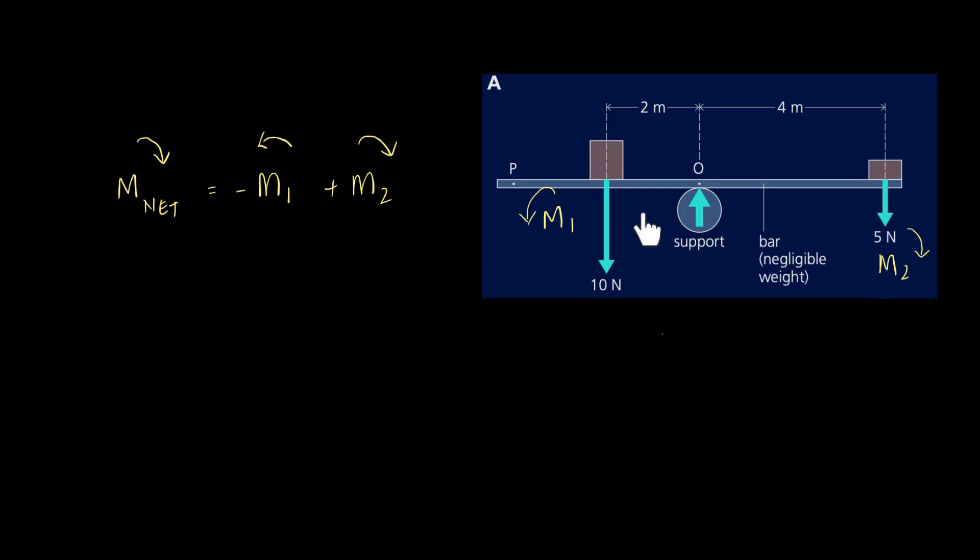Essentially we understand that this moment, once we calculate it, is going to counteract. We put a negative sign there to account for that. In summary, if they're clockwise they're the same positivity or negativity, and they should be opposite if countering. With that in mind, what's responsible for moment 1? Our box over here is moment 1, so that's a force of 10 Newtons, 2 meters away.